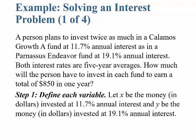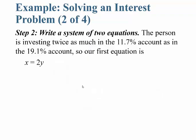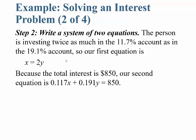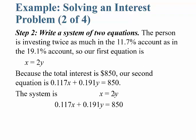Step 1: let X be the dollars invested at 11.7% and Y be the dollars invested at 19.1%. The trick is remembering that twice as much is invested at 11.7% as at 19.1%, so equation 1 is X = 2Y. Because the total interest is $850, converting percentages to decimals gives equation 2: 0.117X + 0.191Y = 850. That's our system.